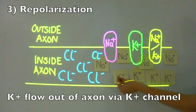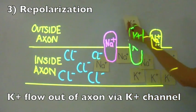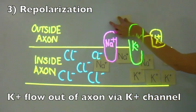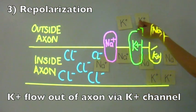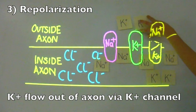After the action potential and depolarization comes repolarization. This time, the potassium channels open and allow a rush of potassium to the outside of the axon.